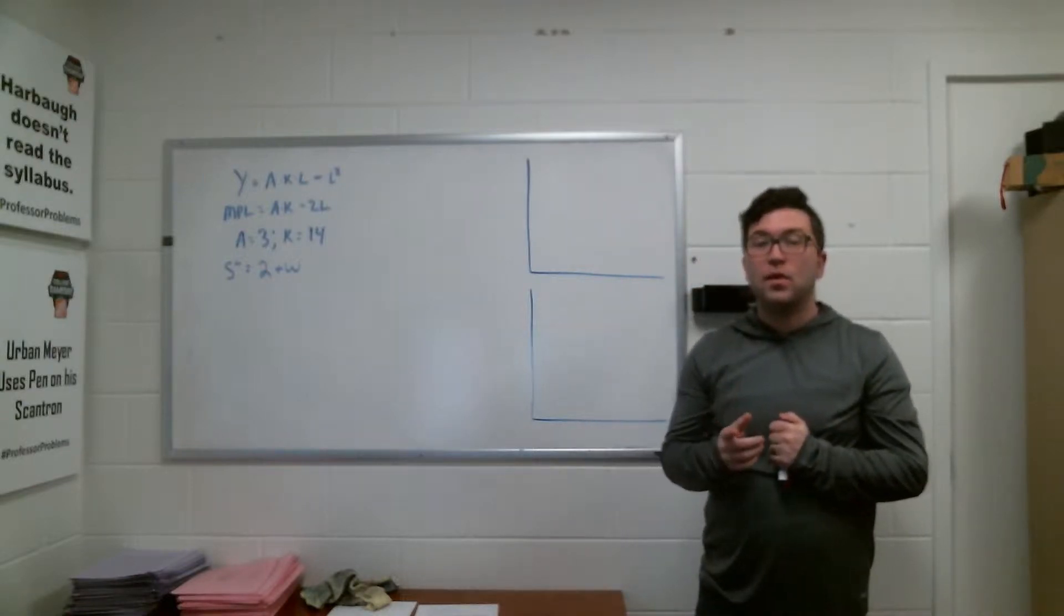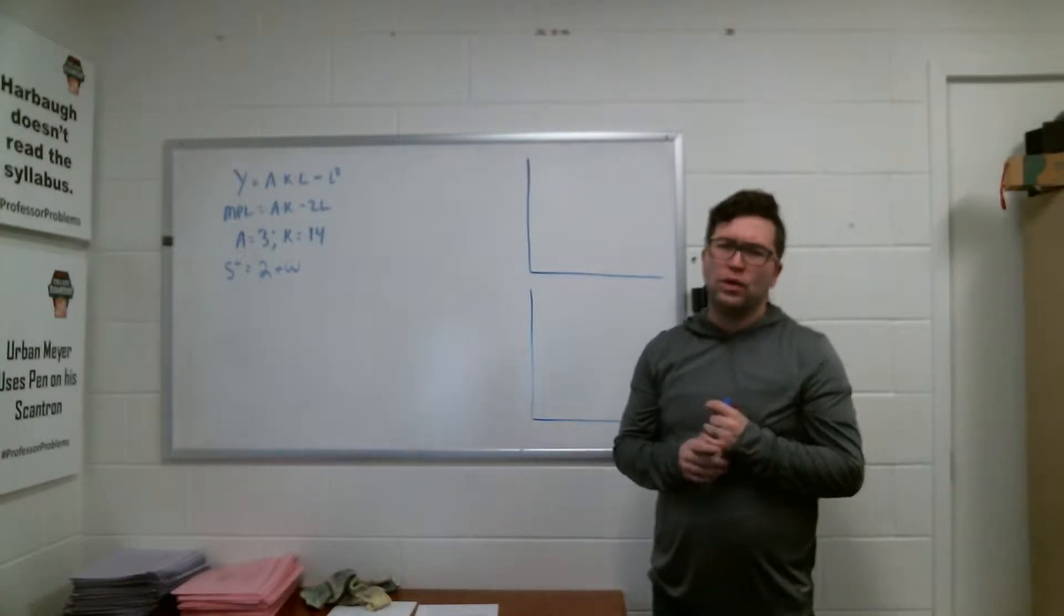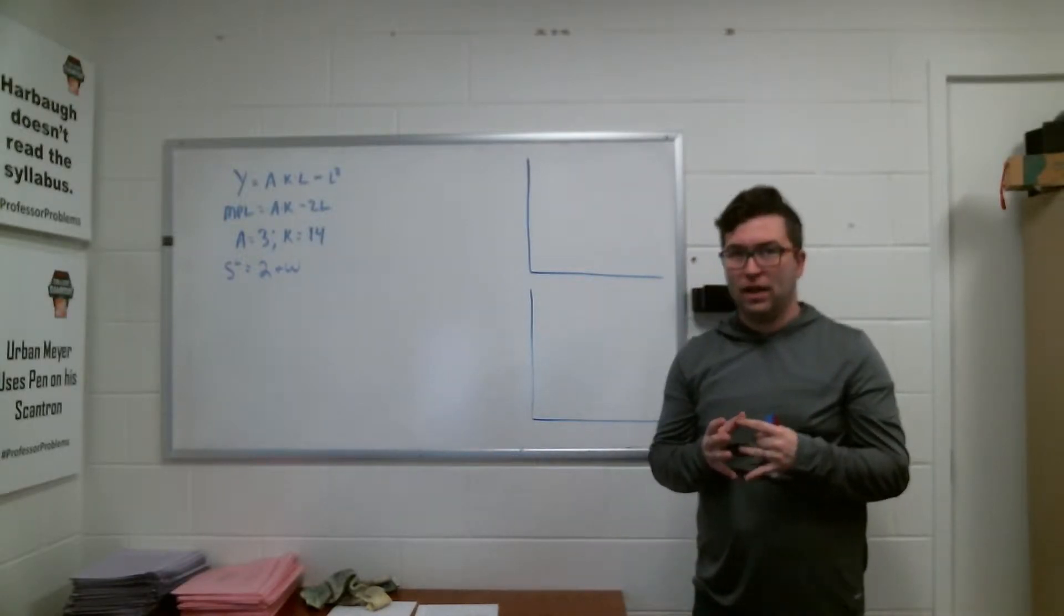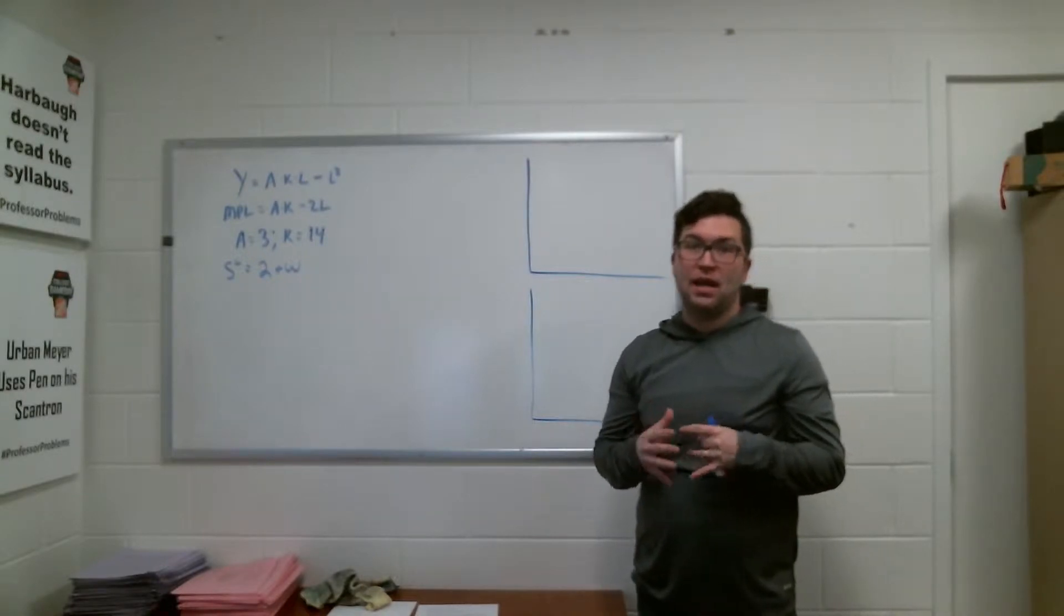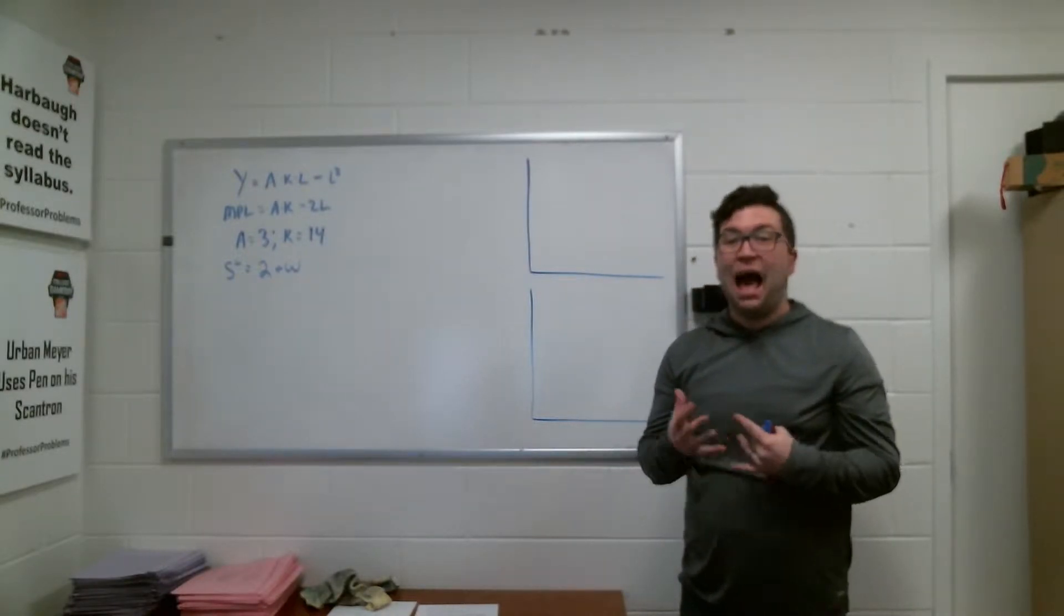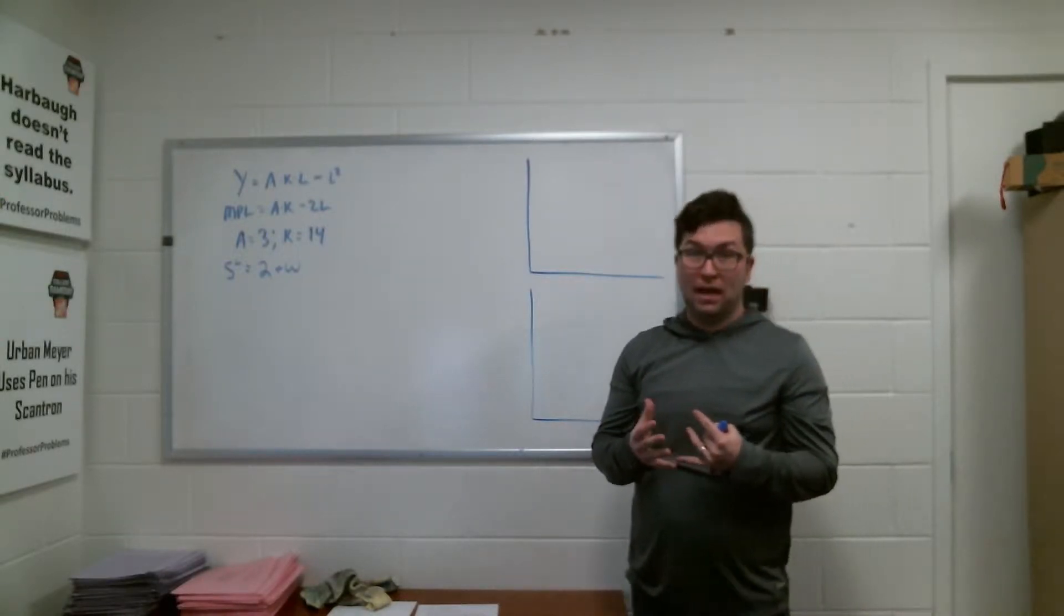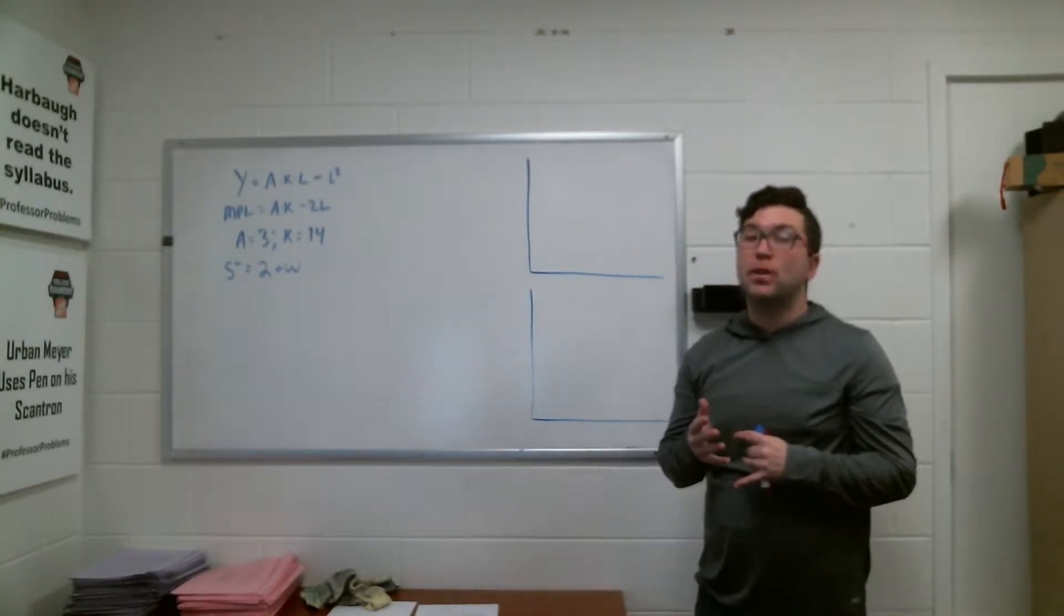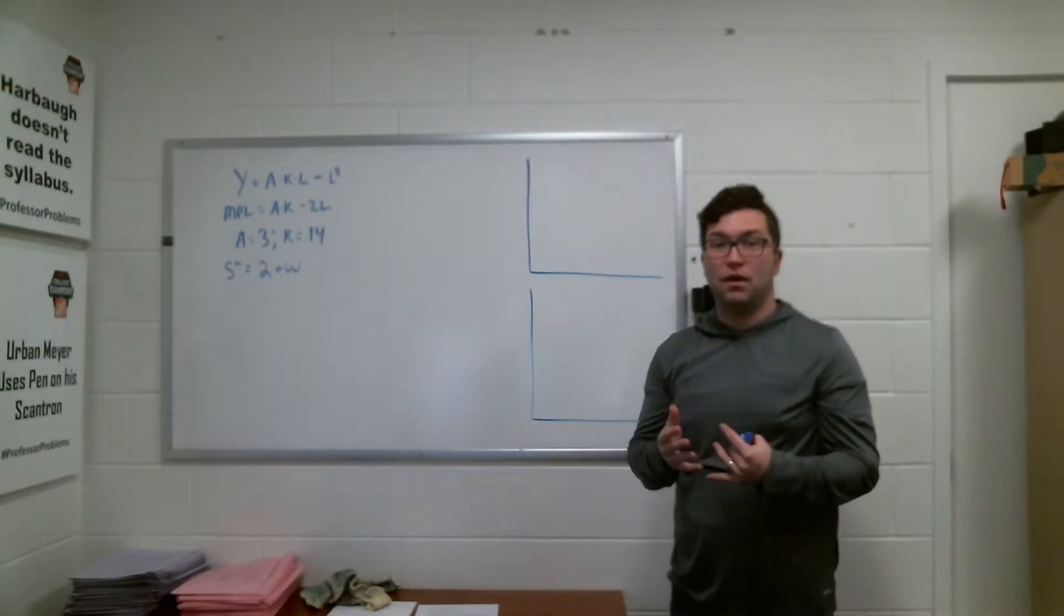Hello students. This is going to be a quick office hours video where we're going to solve a classical labor market problem. You're given a labor demand function and a labor supply function. Out of that you'll get a wage that clears the labor market and an optimal level of labor, that we will then plug into a production function to find our full employment level of output.